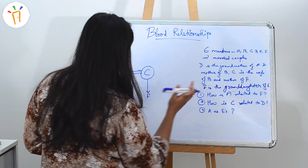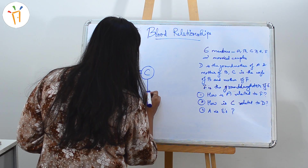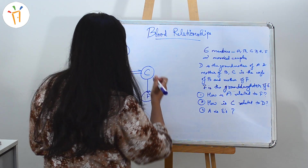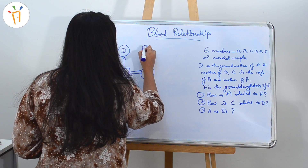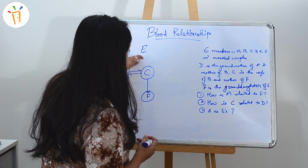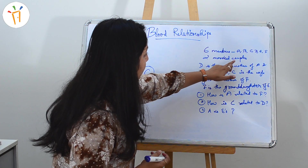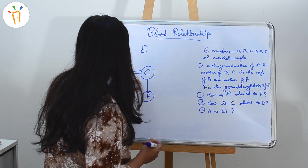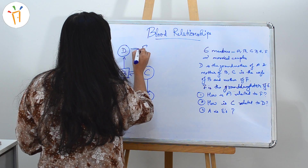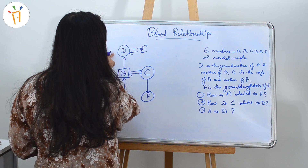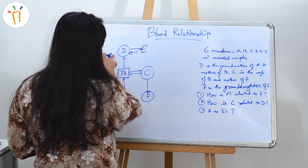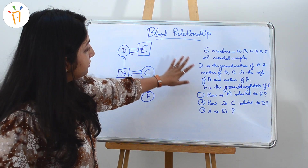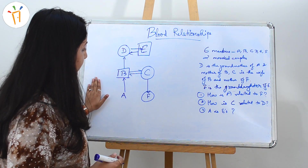The last part says F is the granddaughter of E. If F is the granddaughter, that means F will be female. E will be placed in the second generation. Since we know there are two married couples and one couple is B and C, this would be the second married couple. Since D is the female grandmother, E would be the grandfather. Now we have the complete tree diagram.